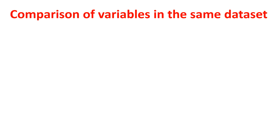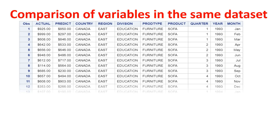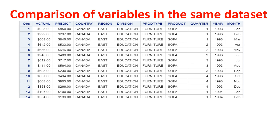Now let's see comparison of variables in the same dataset. If you have a table — this is the sales table where the sales amount has been predicted against the actual amount — we have to test how correct this predicted value is. For example, this was predicted to be 850 but the actual was 925. Remember, till now we were comparing two tables, but here we are comparing two variables in the same table.